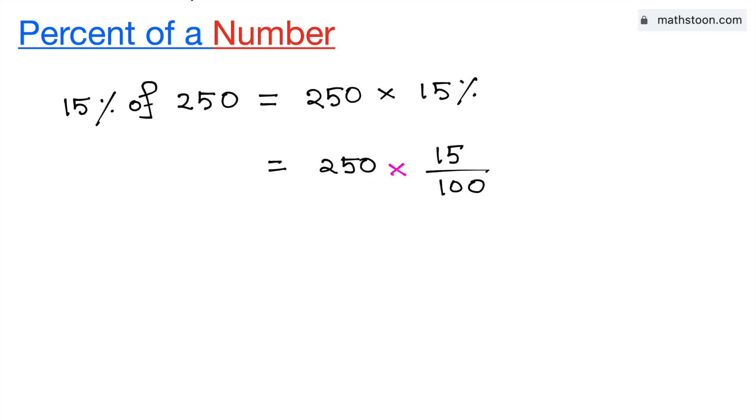Now we will cancel the common zeros. Now see that we have 25 times 15 in the top and 10 in the bottom.